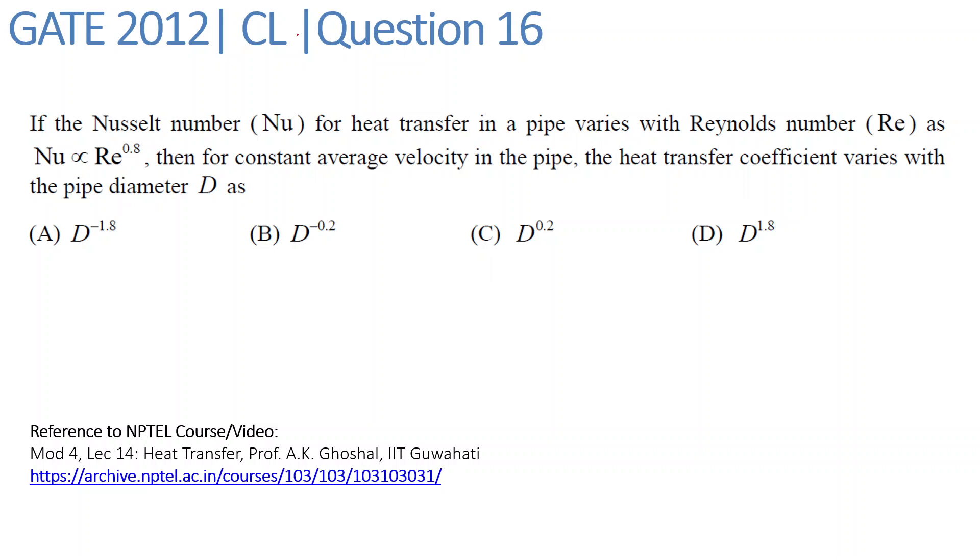We are looking at question 16 of GATE 2012 Chemical Engineering paper. The question is: if the Nusselt number Nu for heat transfer in a pipe varies with Reynolds number Re as Nu is proportional to Re raised to 0.8, then for constant average velocity in the pipe, the heat transfer coefficient varies with the pipe diameter as?